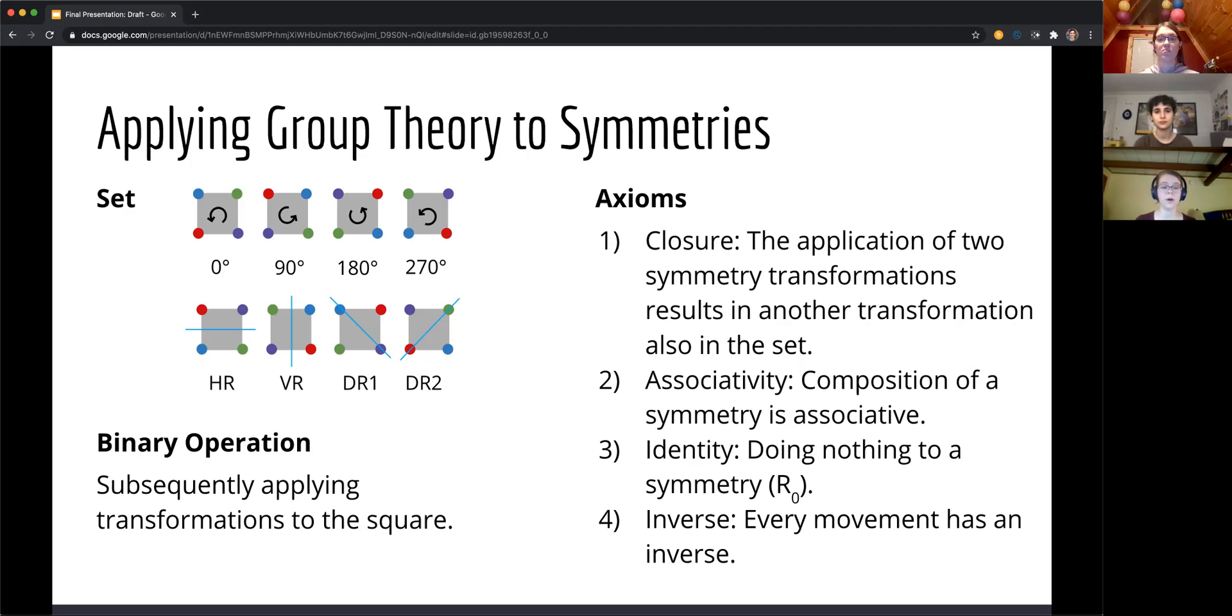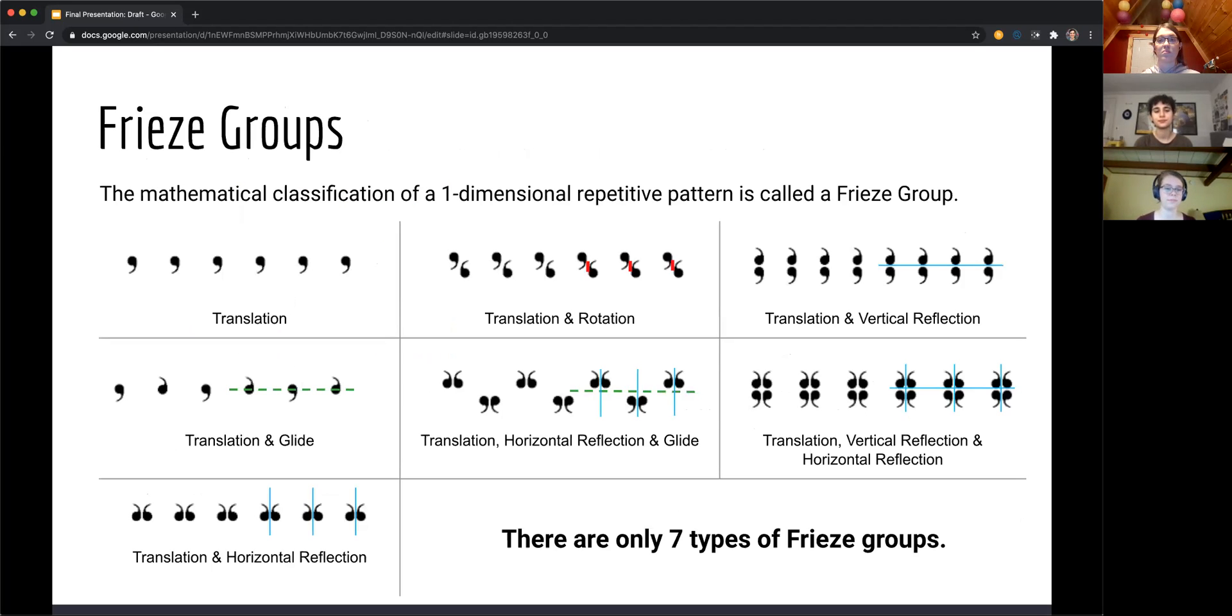Associativity is also held here because by what our binary operation is, we are subsequently applying these actions. The identity is satisfied here as we have the rotation by zero degrees, which looks like the original element. And then the inverse is also true here, such as with a horizontal reflection, the inverse of that is itself. So you reflect horizontally once and then you do it again and you have the identity.